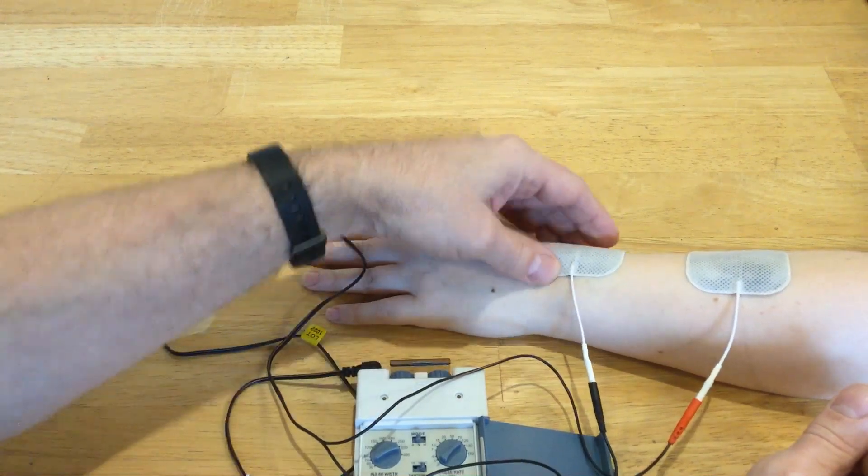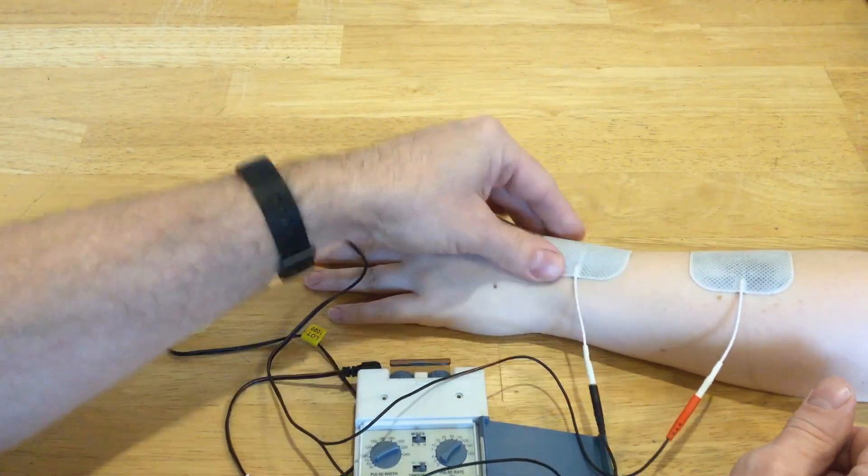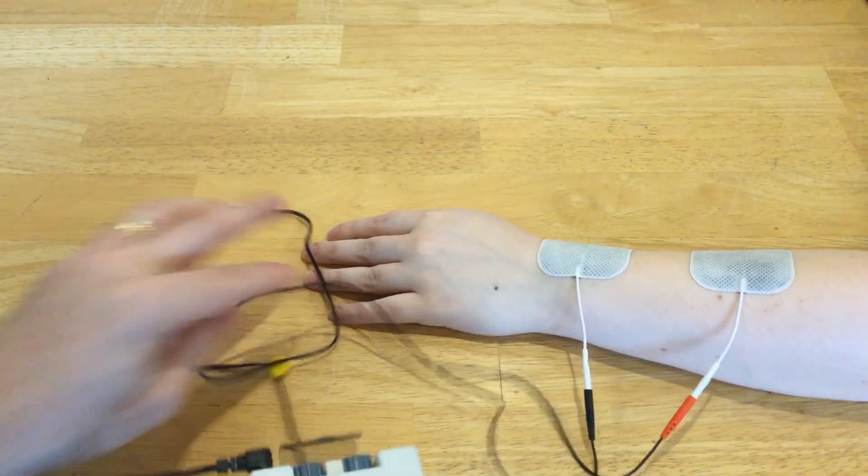As far as your electrodes, you generally just want them to be at least an inch apart and well adhered.